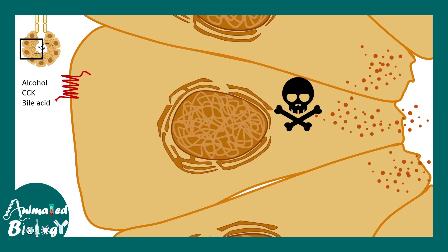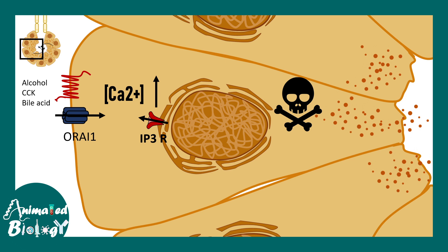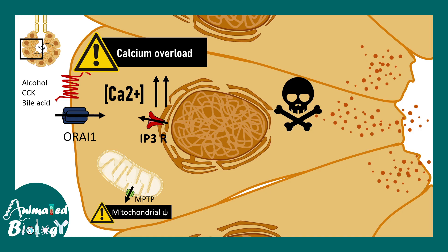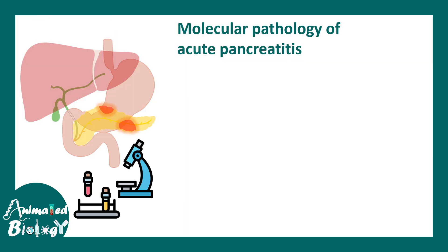At the molecular level, alcohol, bile acid, and cholecystokinin lead to opening of the IP3 receptor on the endoplasmic reticulum membrane, causing a calcium ion increase. The ORAI1 channel then opens, further increasing calcium, resulting in calcium overload in the acinar cells. This leads to opening of the mPTP pores in the mitochondria, reducing mitochondrial membrane potential, resulting in no ATP generation. ATP depletion ultimately causes acinar cell damage and necrosis.